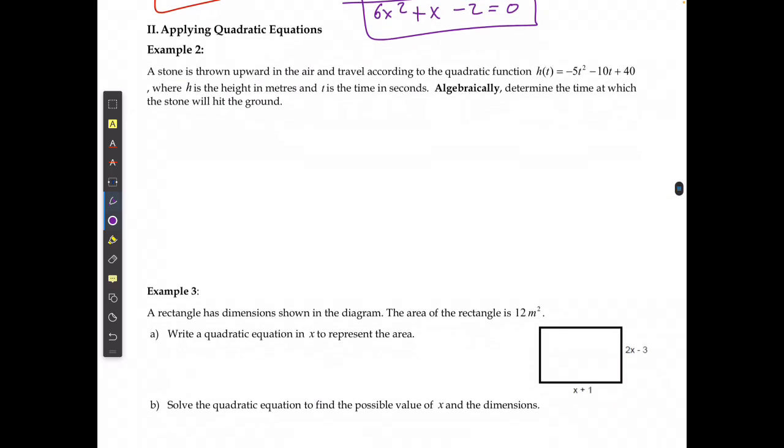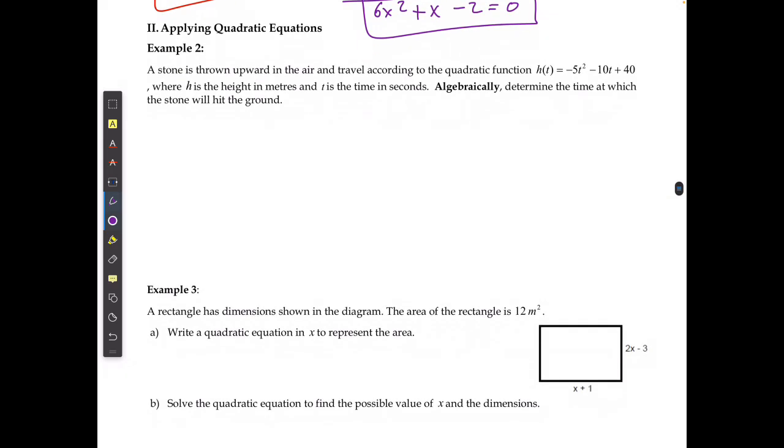If I'm applying it with problem solving, for the first one, a stone is thrown upwards in the air and travels according to the quadratic function. The height as a function of time is equal to negative 5t squared minus 10t plus 40.